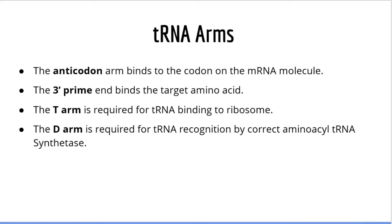The next arm is called the T arm. This arm is involved in binding the tRNA to the ribosome during translation. The D arm is used by the enzyme aminoacyl tRNA synthetase to identify the tRNA type and add the correct amino acid in a process called tRNA charging. We're going to take a closer look at tRNA charging in just a bit.